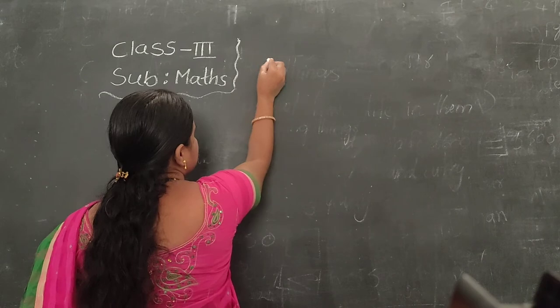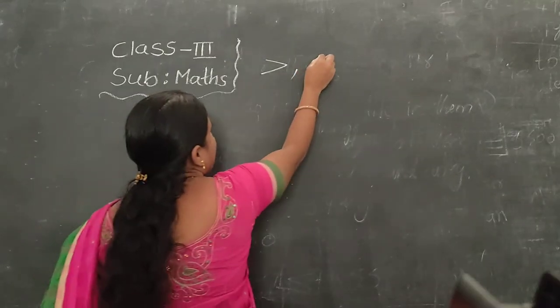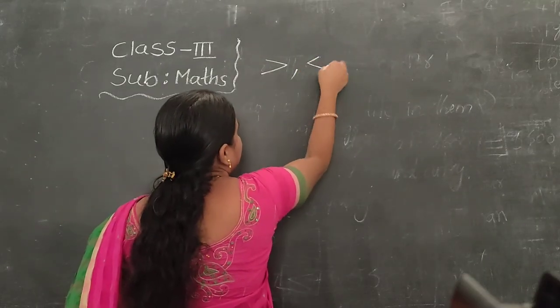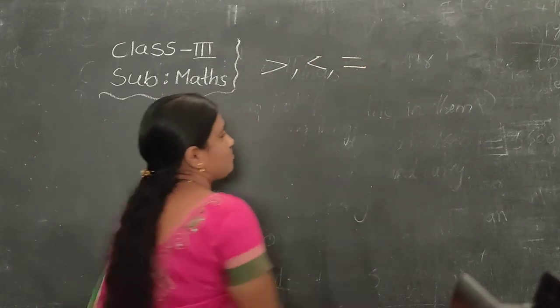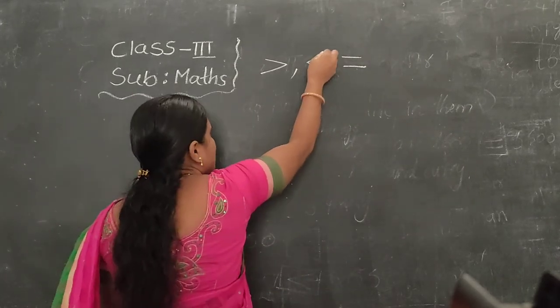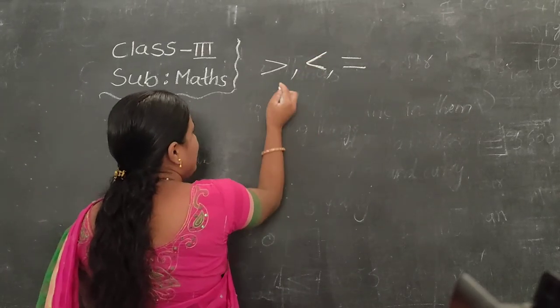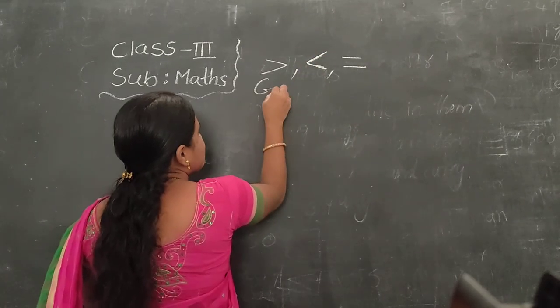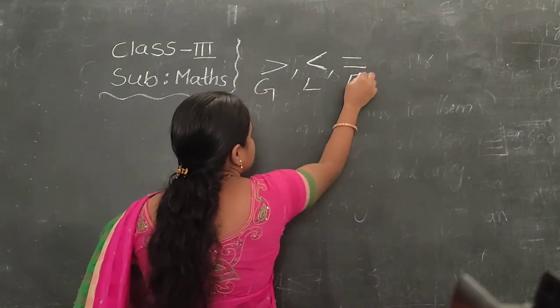Which symbols? Greater than, less than, and equal. So today we are learning to put the symbols: greater than, less than, and equal symbols.